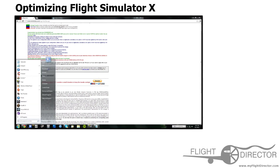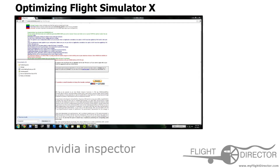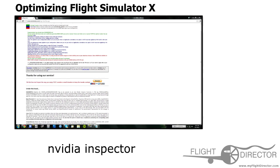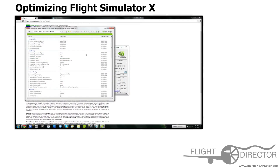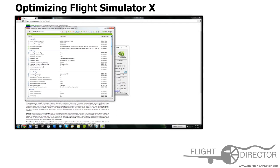Now there are two more things I want to talk about. One is anti-aliasing — that's when Flight Simulator or an outside program renders the game so that jagged edges are smoothed out. I use something called NVIDIA Inspector, which you can download from Google. Open it up and use the driver profile settings button — it looks like a screwdriver — and find MS Flight Simulator X.